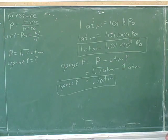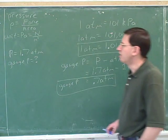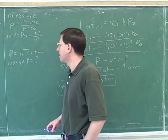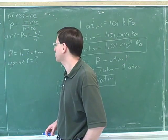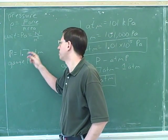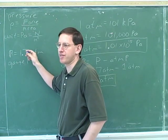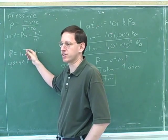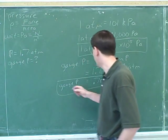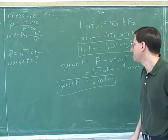For example, we know that the normal atmospheric pressure is one atmosphere, but in our situation the actual pressure is 1.7 atmospheres. So how much above the normal atmospheric pressure are we? Well, seven tenths of an atmosphere. So the gauge pressure is seven tenths of an atmosphere.